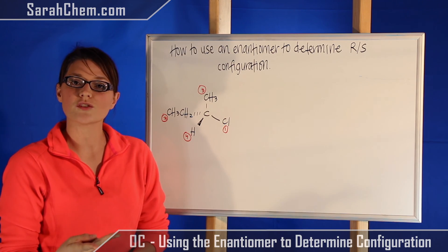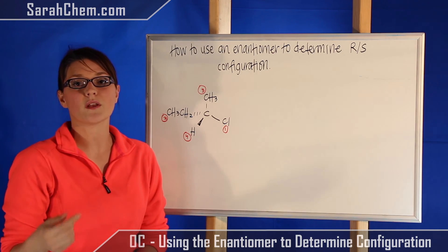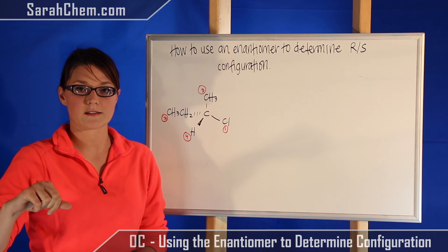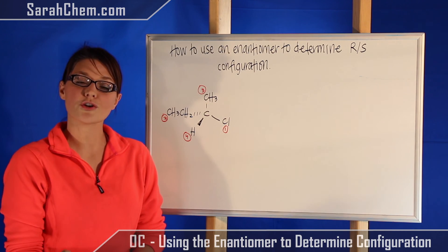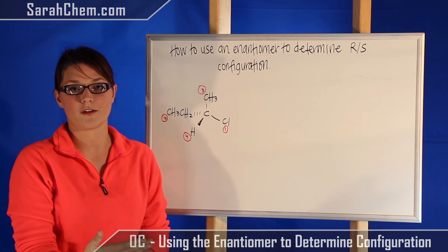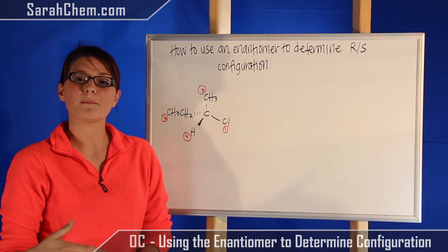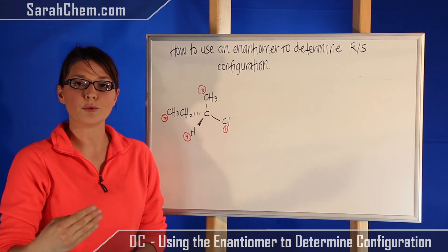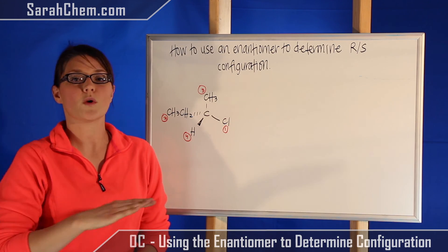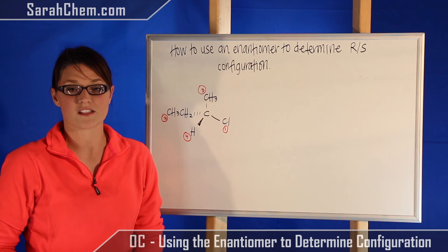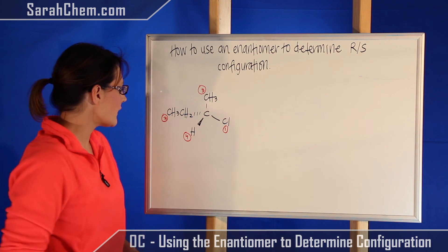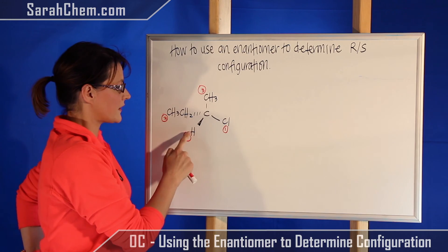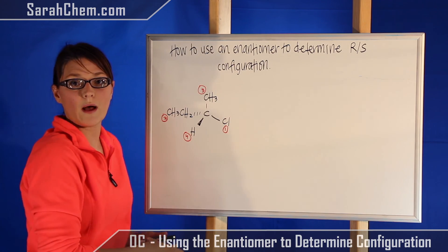There are two ways you can do it. One way is if you can three-dimensionally picture it, you want to rotate it in space. Alternatively, you can use the enantiomer method. What that method entails is you're going to swap group four with whatever is on the hatched wedge position. In this case, group two happens to be on the hatched wedge position, so I'm going to swap these two out.